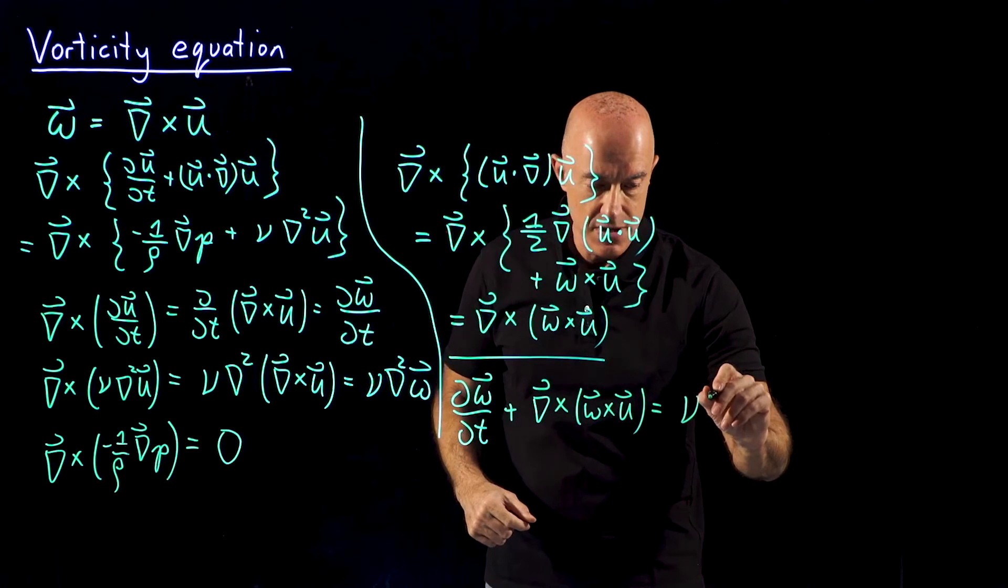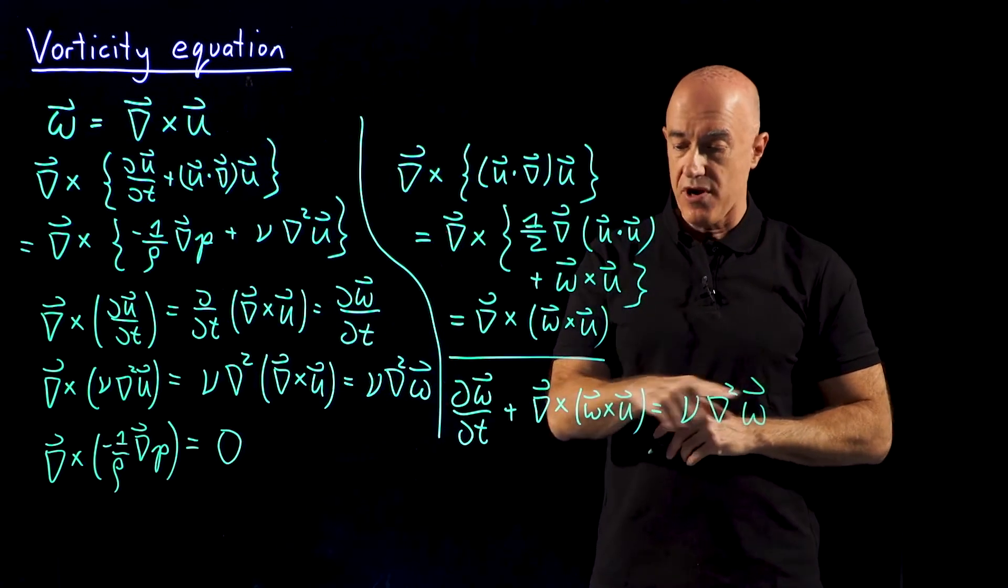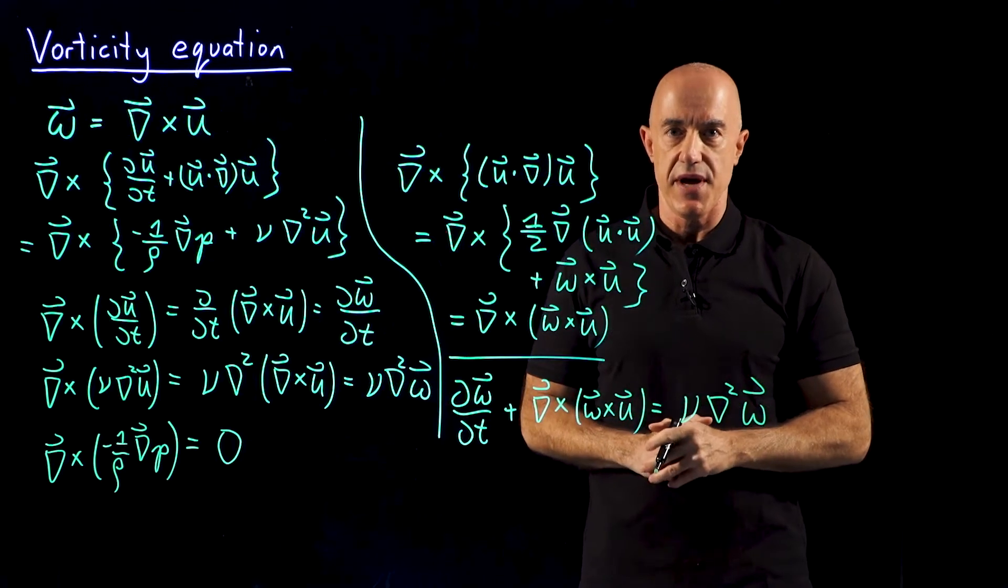So this is nu del squared omega. And that's a form of the vorticity equation.